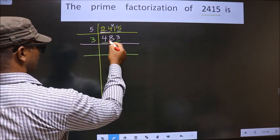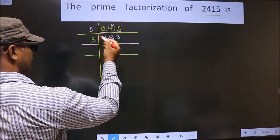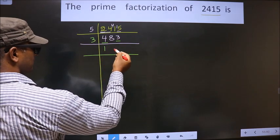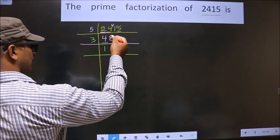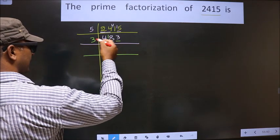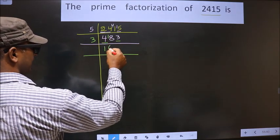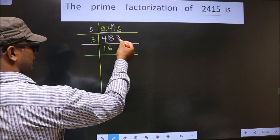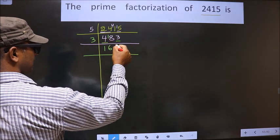First number is 4. A number close to 4 in the 3 table is 3 times 1 is 3. 4 minus 3 is 1, 1 carried forward making it 18. When do we get 18 in the 3 table? 3 times 6 is 18. Next number is 3. When do we get 3 in the 3 table? 3 times 1 is 3.